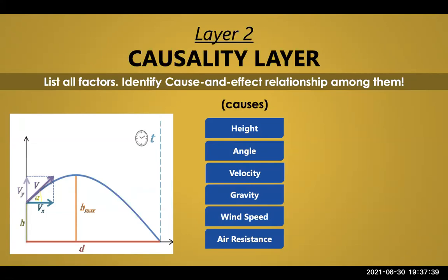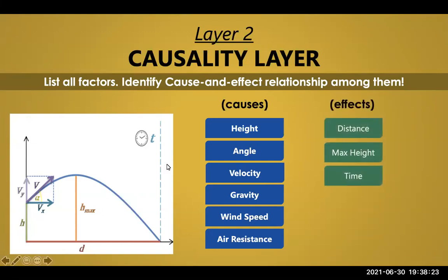Now let's move to the causality layer. Take the example of a projectile from physics — you can measure height h, maximum height h_max, distance traveled, velocity, angle of throw, gravity, and time to destination. When we see a collection of parameters like this, our first reaction is to ask: what is cause and what is effect? This ability to convert a collection of numbers into cause and effect is what the causality layer does. You need domain knowledge to understand causality.